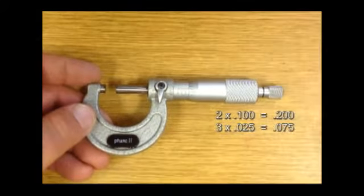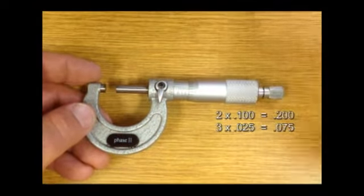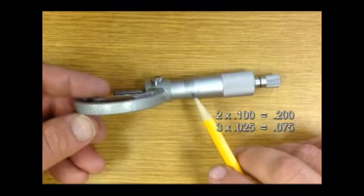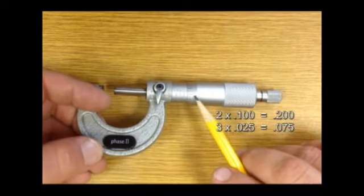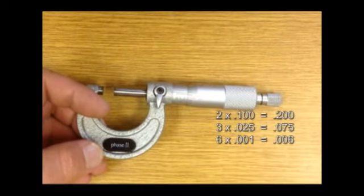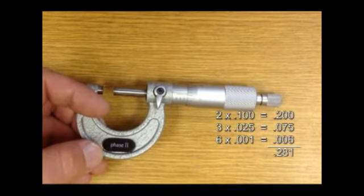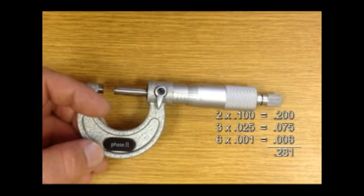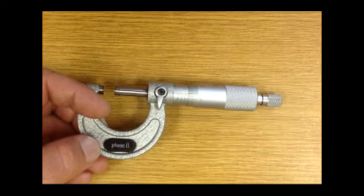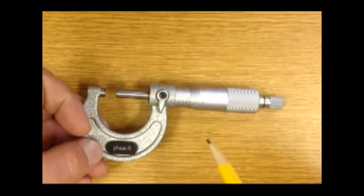Then we go to our circular dial. So you can see that there's zero here. It goes around five and six. So 275,000 plus six is going to be 281,000. That's how thick this pencil is.